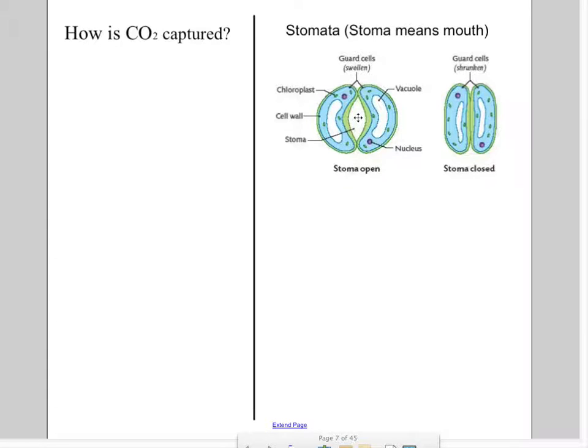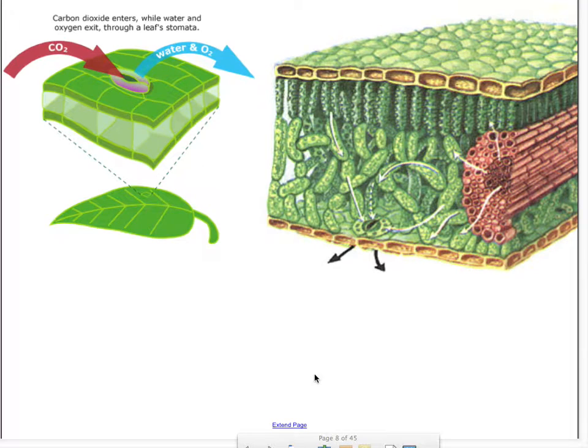A stomata is merely an opening that is found on the bottom side of the leaf. When it's open it lets in carbon dioxide or out oxygen as it needs to, and this is also the same place where water is lost through transpiration.